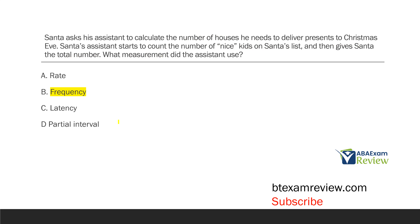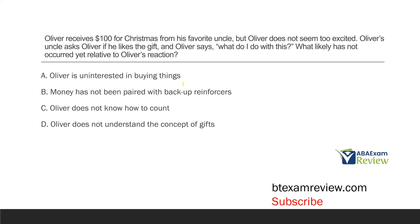Pretty straightforward measurement question. If you struggled, go back and review the task list study guide and your different continuous measurements. Oliver receives a hundred dollars for Christmas from his favorite uncle, but Oliver does not seem too excited. Oliver's uncle asks Oliver if he likes the gift, and Oliver says, 'What do I do with this?' What likely has not occurred yet relative to Oliver's reaction? We're looking at Oliver's reaction — he got a hundred dollars, was not excited, and asked what to do with it.